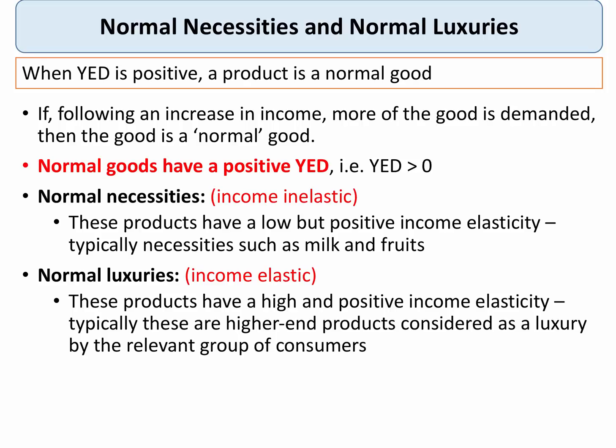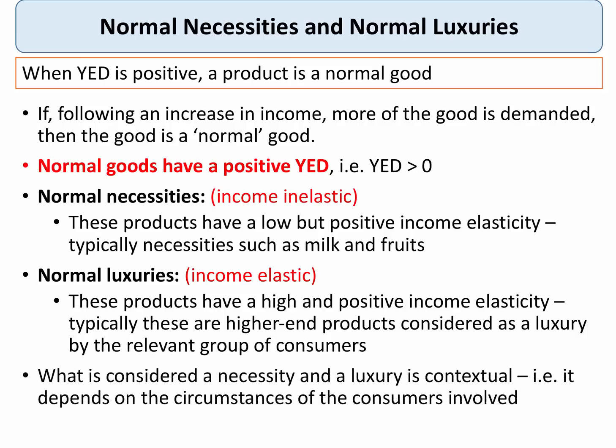Normal luxuries, on the other hand, are income elastic. They have an income elasticity of demand of greater than plus one, meaning that demand increases more than proportionate to a change in income. So for example a rise in income of eight percent might lead to a twenty percent rise in demand. Luxury goods are therefore much more income sensitive in terms of their demand. Keep in mind that what people regard as a necessity and a luxury is highly contextual — it absolutely depends on the circumstances of the consumers involved.